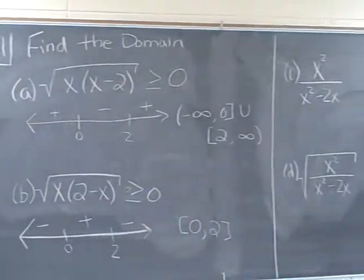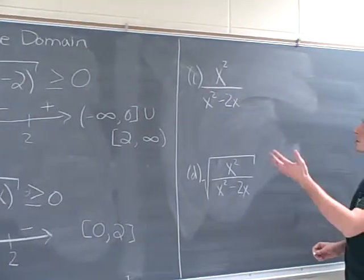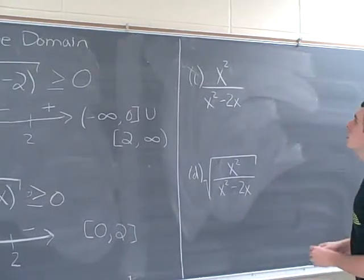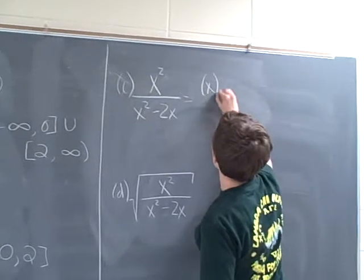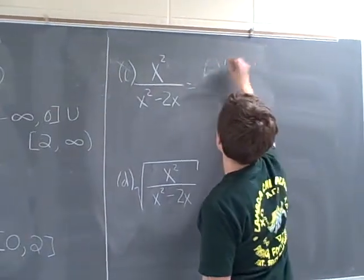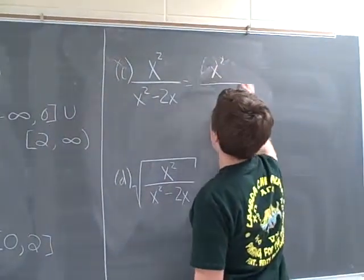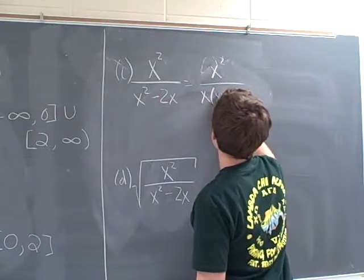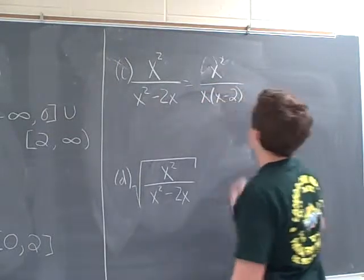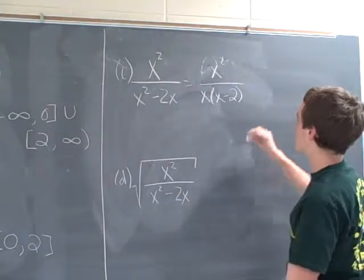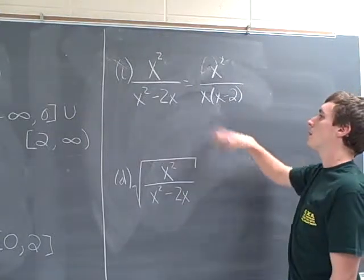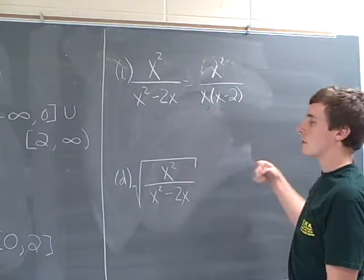Alright. Moving over here to part C, we're going to do this one a little differently. We don't need to do a sign chart because there's no square roots. You'll notice that this is the same thing as x. I'll just leave that as x squared. And on the bottom, we have x times x minus 2. Now, the first time I did this, I just canceled that out, but you can't do that. That's a mistake.